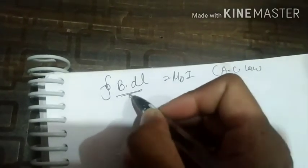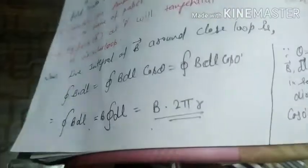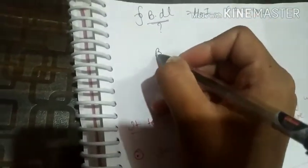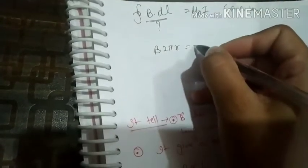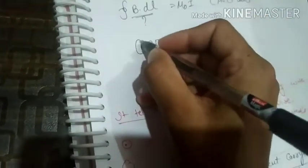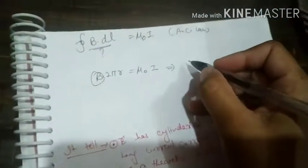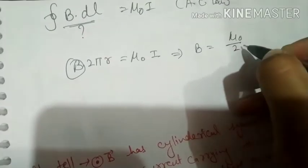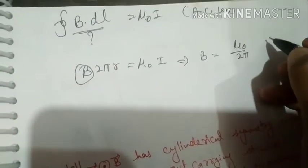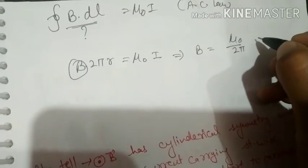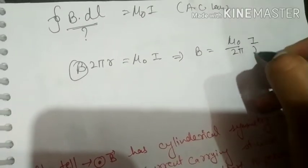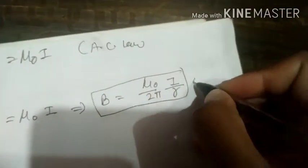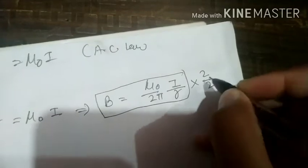So this value, B into 2πr, equals μ₀I. Therefore, B equals μ₀I divided by 2πr. If we multiply and divide by 2, it becomes μ₀I over 2πr, or you can say 2I by r divided by 4π.